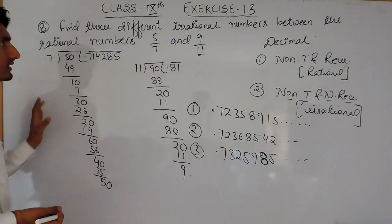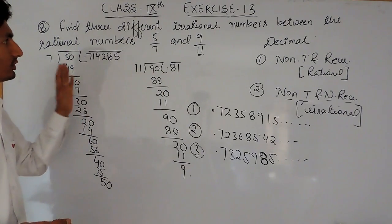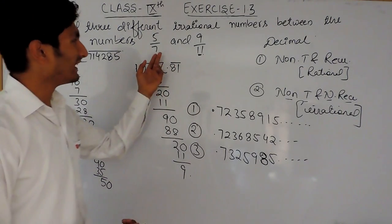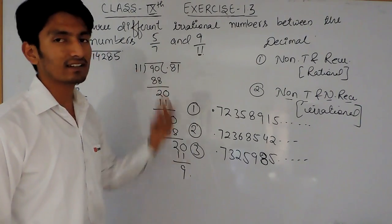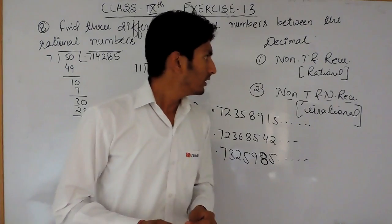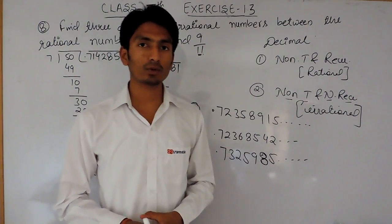So this is how you can insert irrational numbers between two rational numbers. Obviously there will be infinite irrational numbers between these rational numbers. This is how you can solve this particular question.